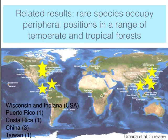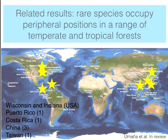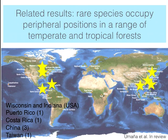In an additional project, we are testing a similar idea but including plot data from both temperate and tropical forests, using the network of different plots I mentioned before. Across all these different sites, we found again that rare species tend to occupy peripheral positions in that functional space.